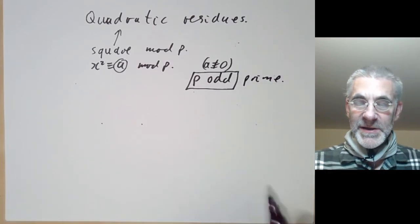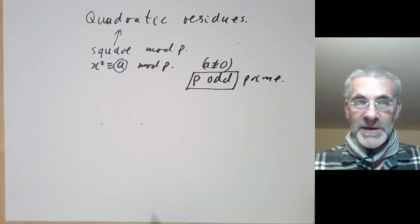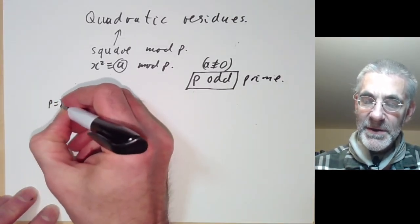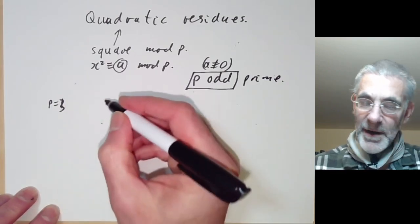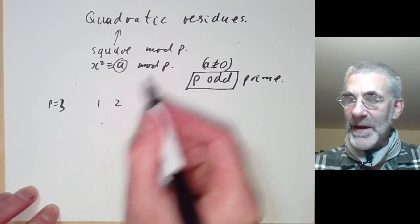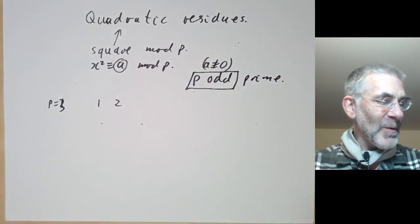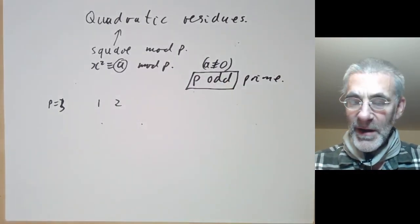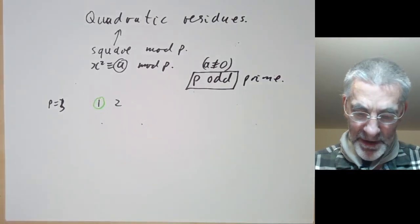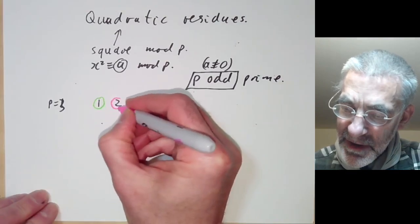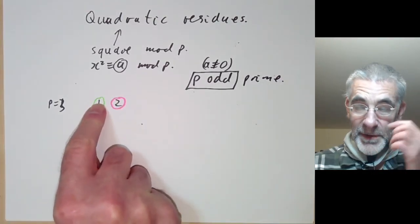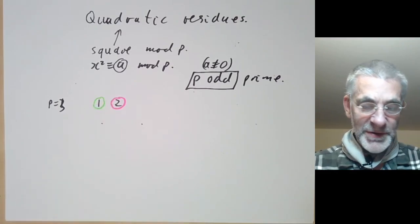Let's start by making a little list of examples of quadratic residues for various primes. For p equals 3, there are two numbers modulo p that are non-zero. I'm going to mark the quadratic residues in green and the non-residues in red. So the only square is 1 modulo 3.